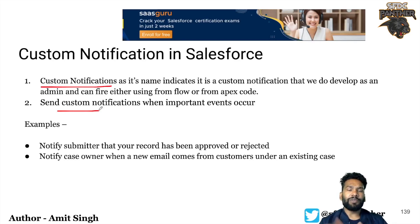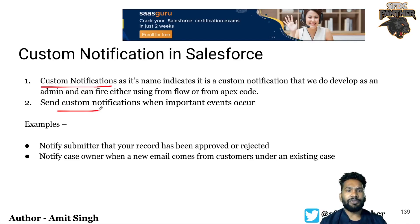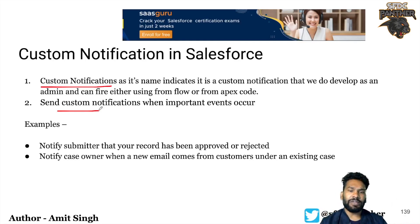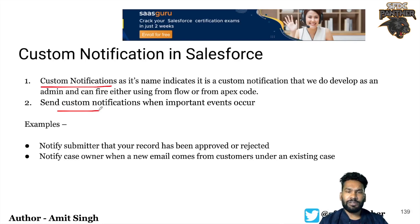We basically need to send custom notifications whenever important events occur. For example, we might want to notify a submitter who has submitted a record for approval — we can notify them whether the record has been approved or rejected. Instead of sending an email, we can send a custom notification, which is really very powerful.